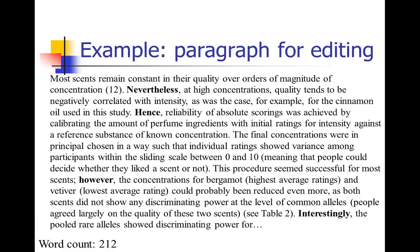If you read this paragraph from start to finish, you'll notice it's pretty difficult to follow. It says: 'Most scents remain constant in their quality over orders of magnitude of concentration. Nevertheless, at high concentrations, quality tends to be negatively correlated with intensity, as was the case, for example, for the cinnamon oil used in the study. Hence, reliability of absolute scorings was achieved by calibrating the amount of perfume ingredients with initial ratings for intensity against a reference substance of known concentration. The final concentrations were in principle chosen in a way such that individual ratings showed variance among the participants within the sliding scale between 0 and 10, meaning that people could decide whether or not they liked a scent. This procedure seemed successful for most scents. However, the concentrations for bergamot and vetiver could probably have been reduced even more as most scents did not show any discriminating power at the level of common alleles. People largely agreed on the quality of these two scents. Interestingly, the pooled rare alleles showed discriminating power.'